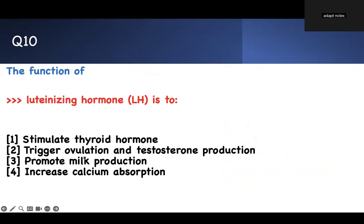The function of luteinizing hormone. Luteinizing hormone. Love hormones. Therefore, that's the mnemonic. What are you going to use? Love hormones. Stimulates thyroid hormone? You know thyroid hormone has to start with a T. Trigger ovulation and testosterone. Even if you don't know, keep that one. Promote milk production? Milk production is not a hormone. Increased calcium absorption is not a hormone. I say love hormones. Trigger ovulation and testosterone. Number two is the right answer.